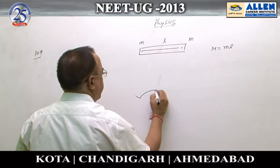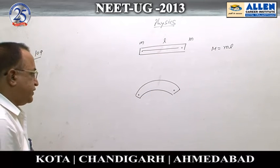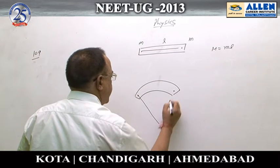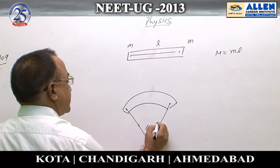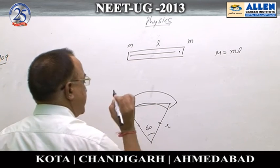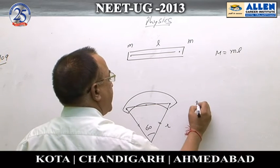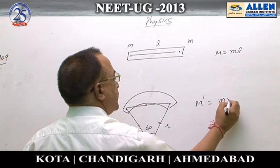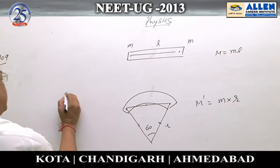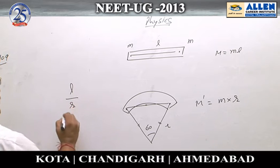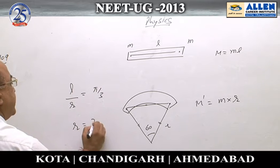Now we are changing its shape. Naturally, the effective length has changed. In the diagram, this angle is given as 60 degrees. Naturally, this length equals this length equals r, forming an equilateral triangle. That means this distance is also r. The arc length is l, radius is r, so arc length divided by radius is the angle in radians, which is π/3. So r = 3l/π.